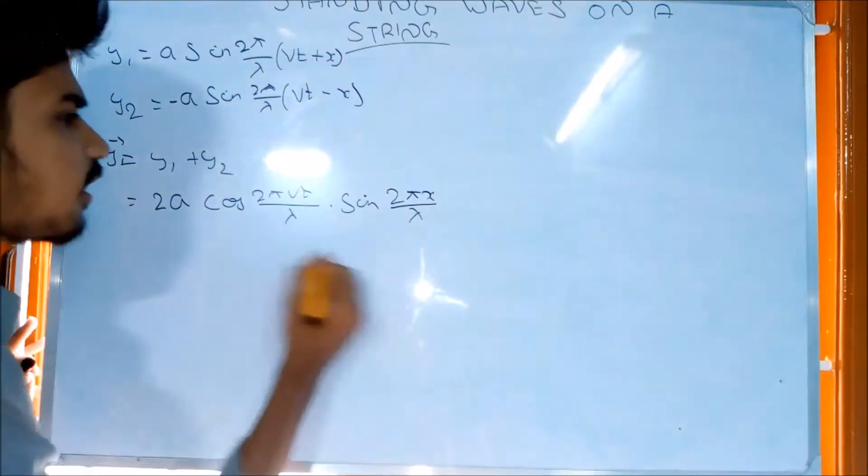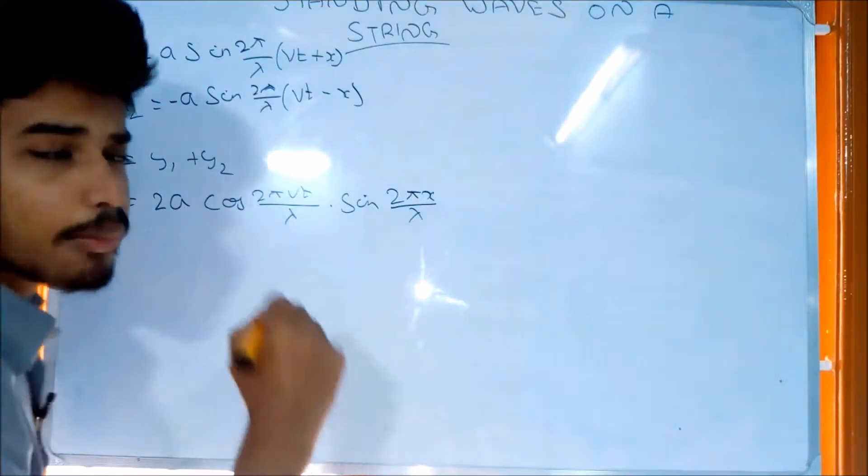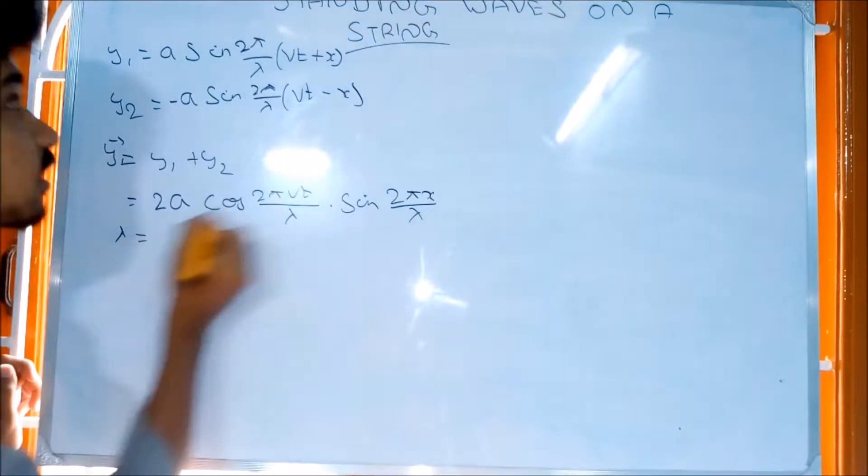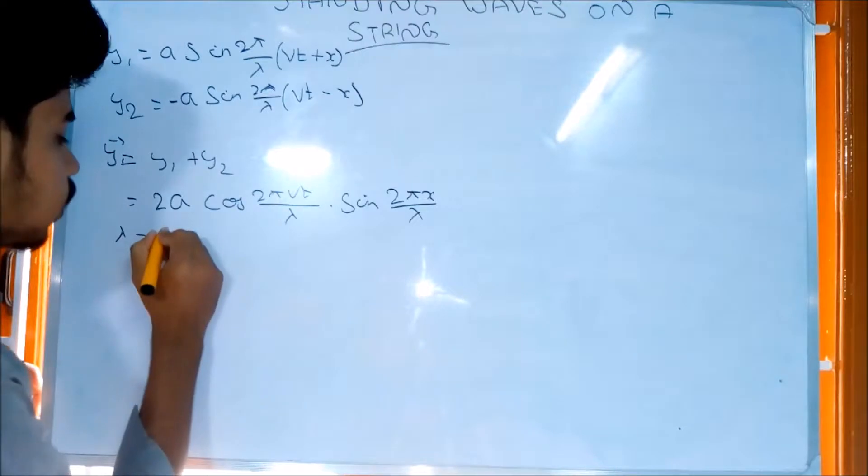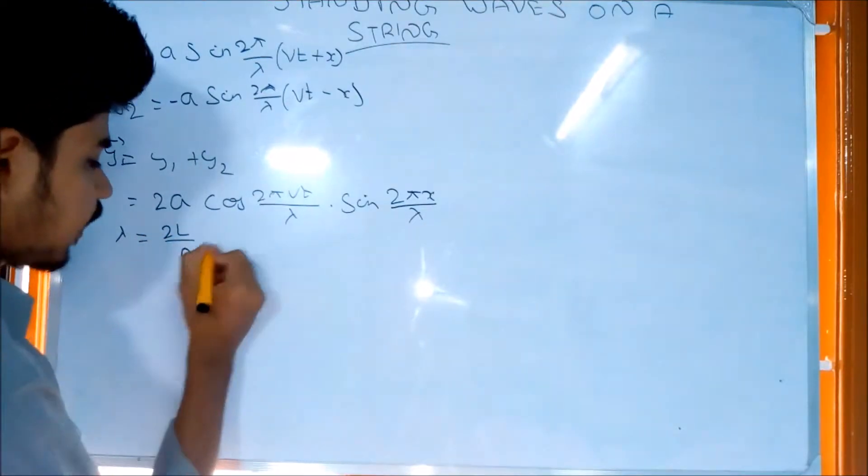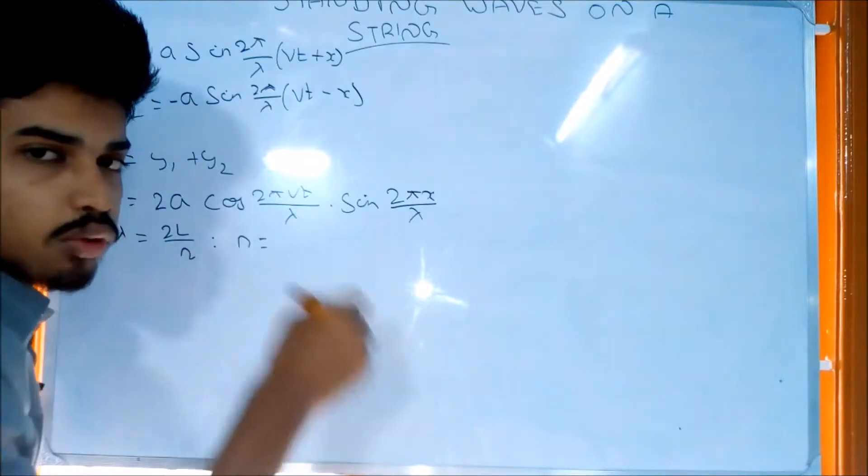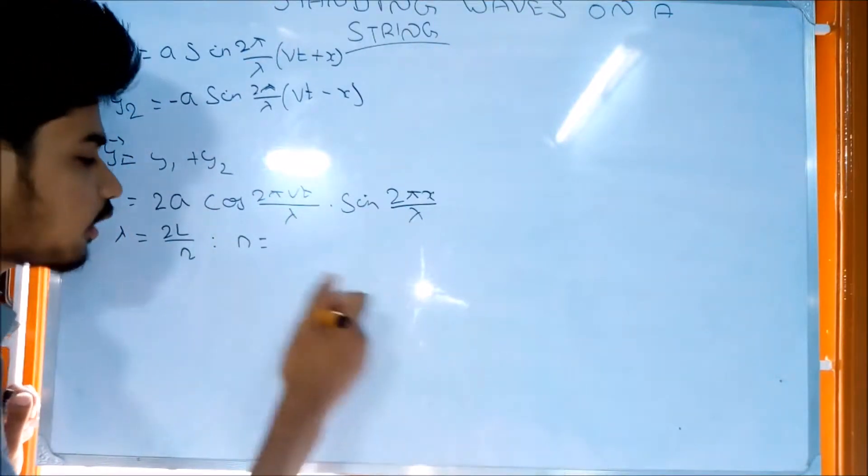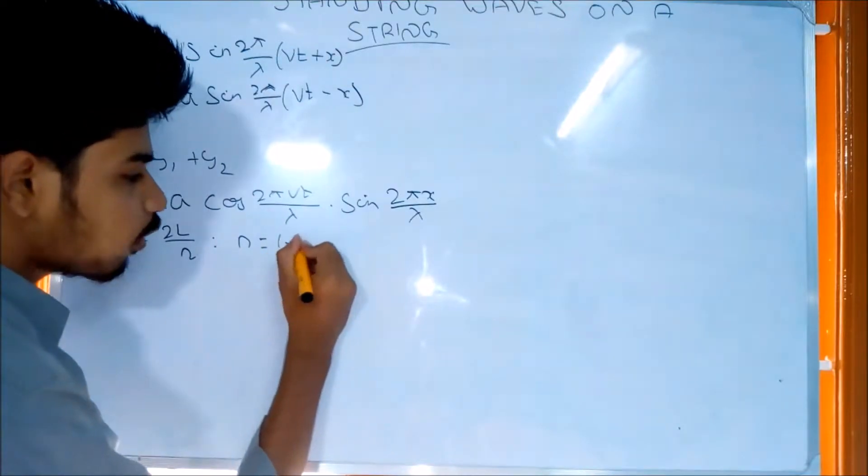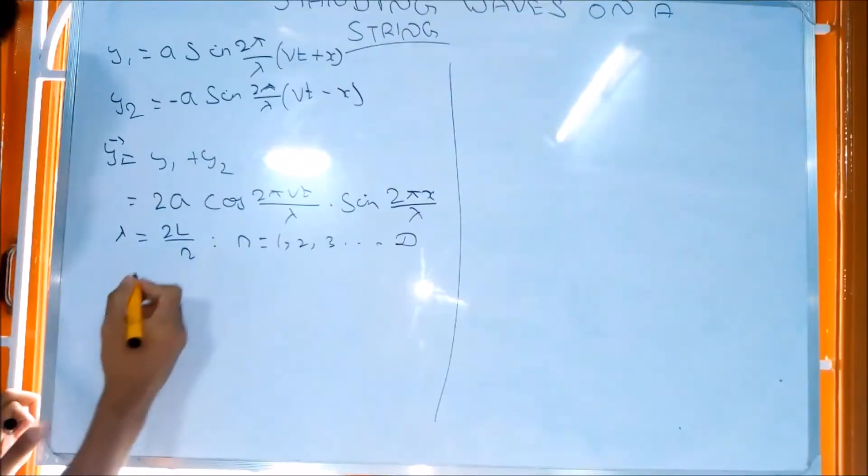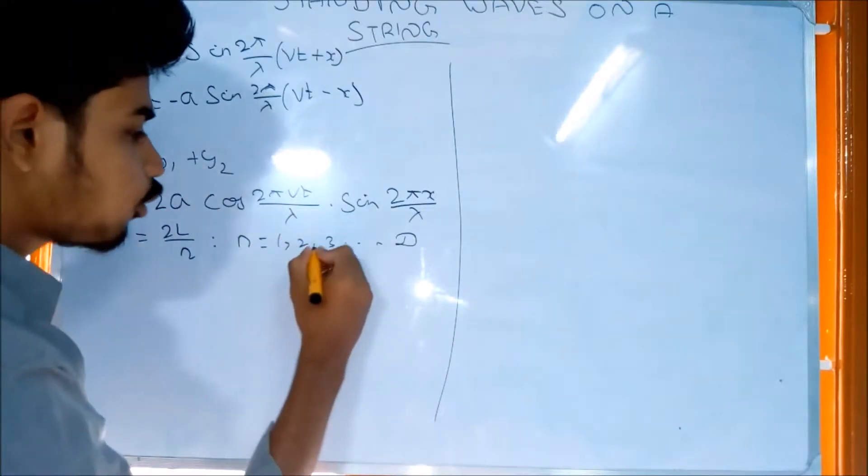Now for the wavelength and frequency, the frequency is n times v divided by 2L, where n is the mode number: 1, 2, 3, and so on.